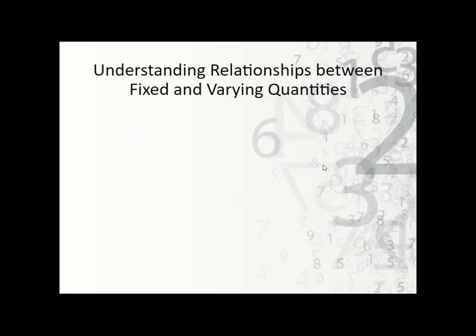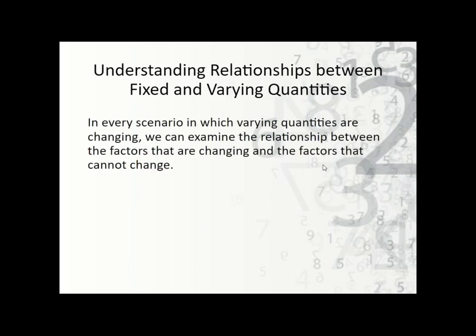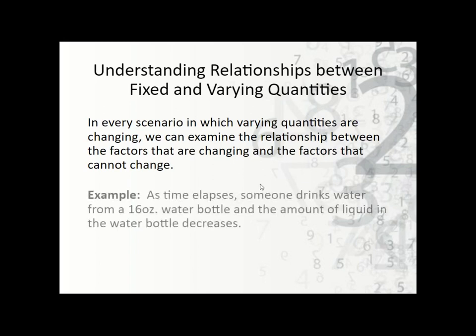Understanding the relationships between them: in every scenario where varying quantities are changing, we can examine the relationship between the factors that are changing and the factors that cannot change. For instance, as time elapses, someone drinks water from a bottle and the amount of liquid decreases. We know 16 ounces is the maximum — it doesn't change — however the amount of water is changing as time passes. This is how we state a relationship between a fixed and a varying quantity.